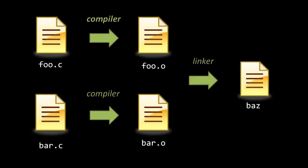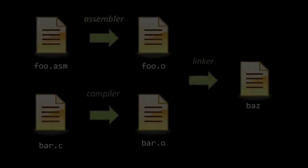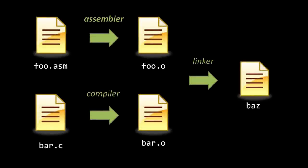For example, say you're programming in the high-level language C. We've written our C code in two different source files, foo.c and bar.c, and we run each one independently through the compiler, spitting out two separate object files, foo.o and bar.o. Then, just like in assembly, we run the object files together through the linker to produce a single executable. It's possible in some cases to link object files generated from different languages — it's quite common to link object files generated from assembly code with object files generated from C code.